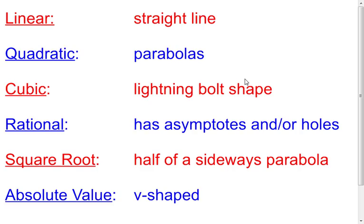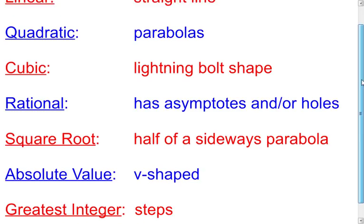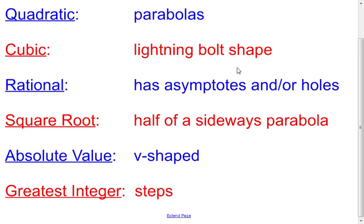A rational function will have either asymptotes or holes, sometimes both. But if it has an asymptote or hole, it's a rational function. A square root function will be sort of half of a sideways parabola. We'll see one, and that will make more sense when we see it.